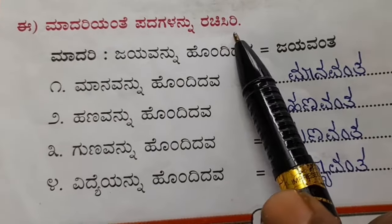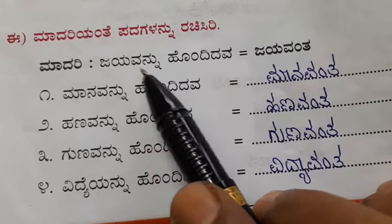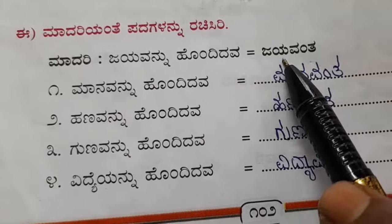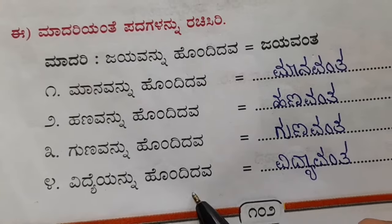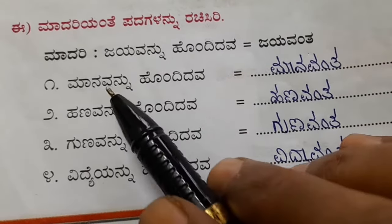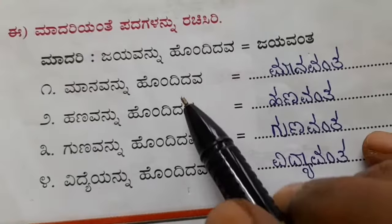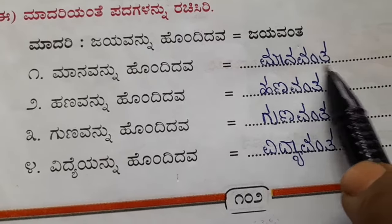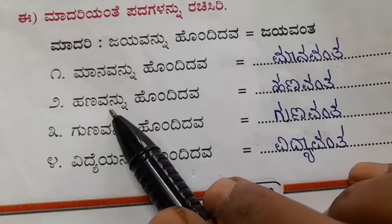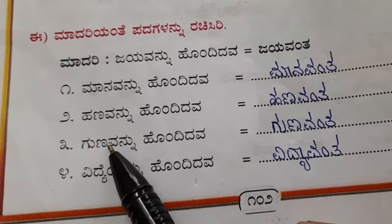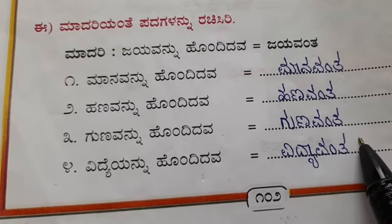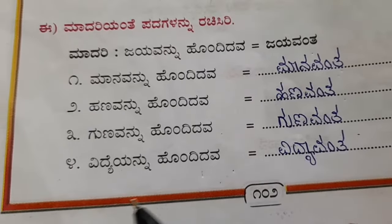E madari yante padakalannu rachisi — make words like the given example. Jayavannu hundhiruva = jayavanta — a person who is victorious is called a victorious person. Manavannu hundhiruva = manavanta — a person with lot of respect is called respectful. Hanavannu hundhidava = hanavanta — a person who has money. Gunavannu hundhidava = gunavanta — a person with very good character. Vidyayennu hundhiruva = vidyavanta — a person who is well educated.